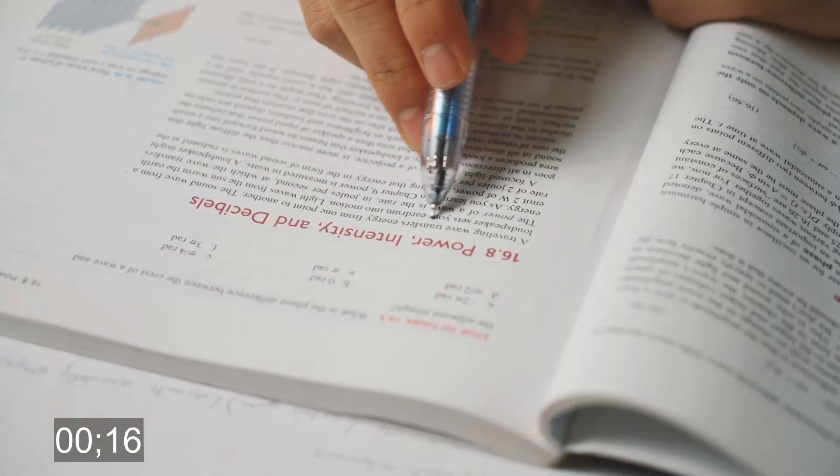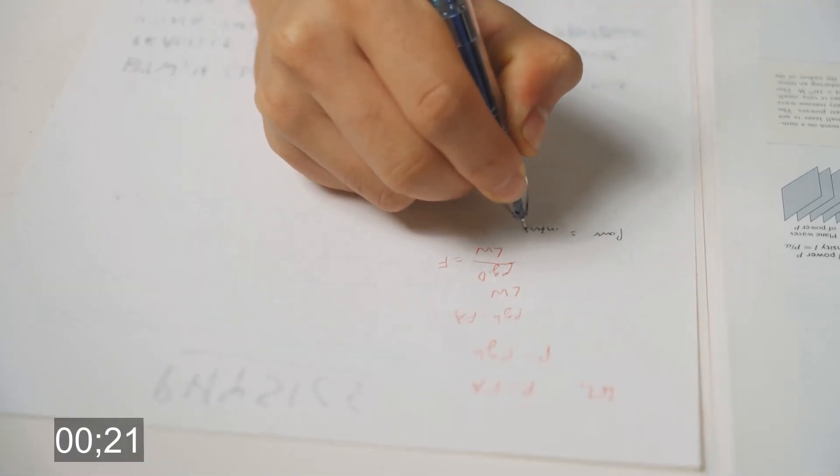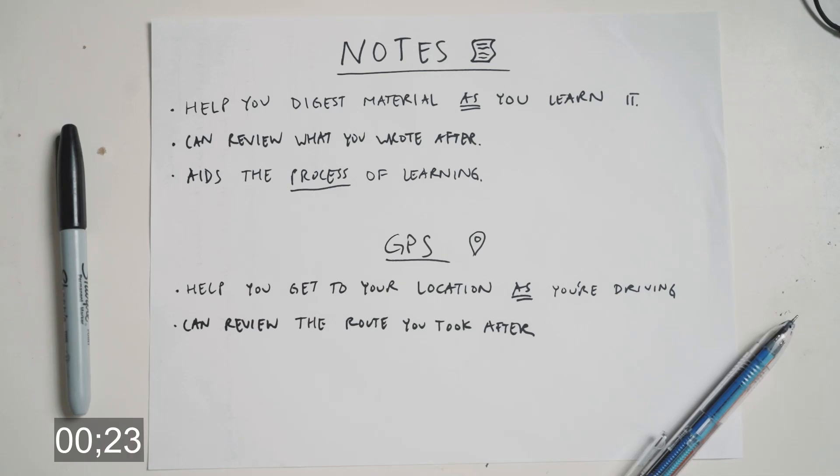Unless you're in a timed setting, I think you should never write anything down before you actually understand what you're reading. In my opinion, notes should be like a GPS. You use them to help you get where you want to go in terms of understanding, but maybe only a little bit afterwards to see where you actually went.